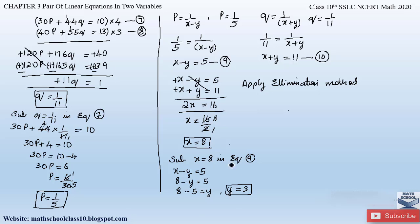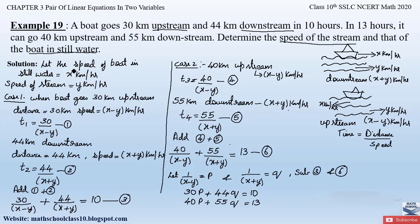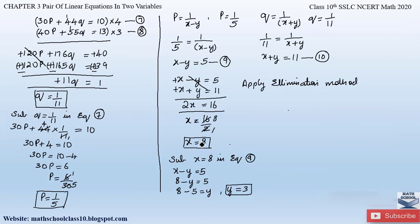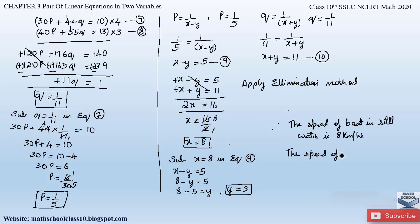Recall we assumed the speed of the boat in still water to be x kilometers per hour and the speed of the stream to be y kilometers per hour. Therefore the speed of the boat in still water is 8 kilometers per hour and the speed of the stream is 3 kilometers per hour.